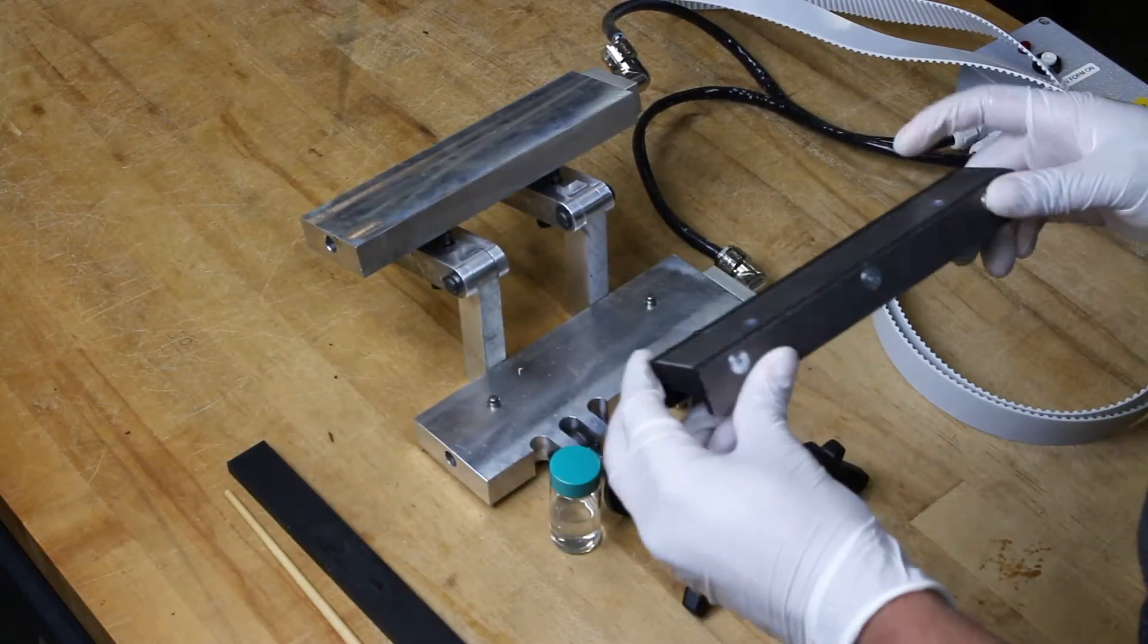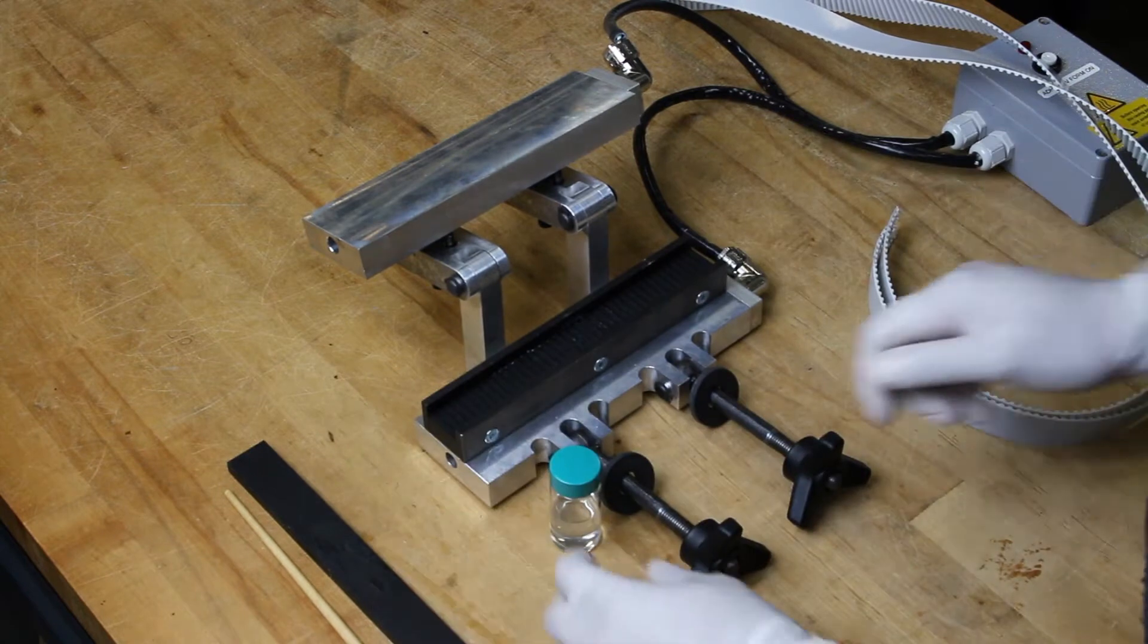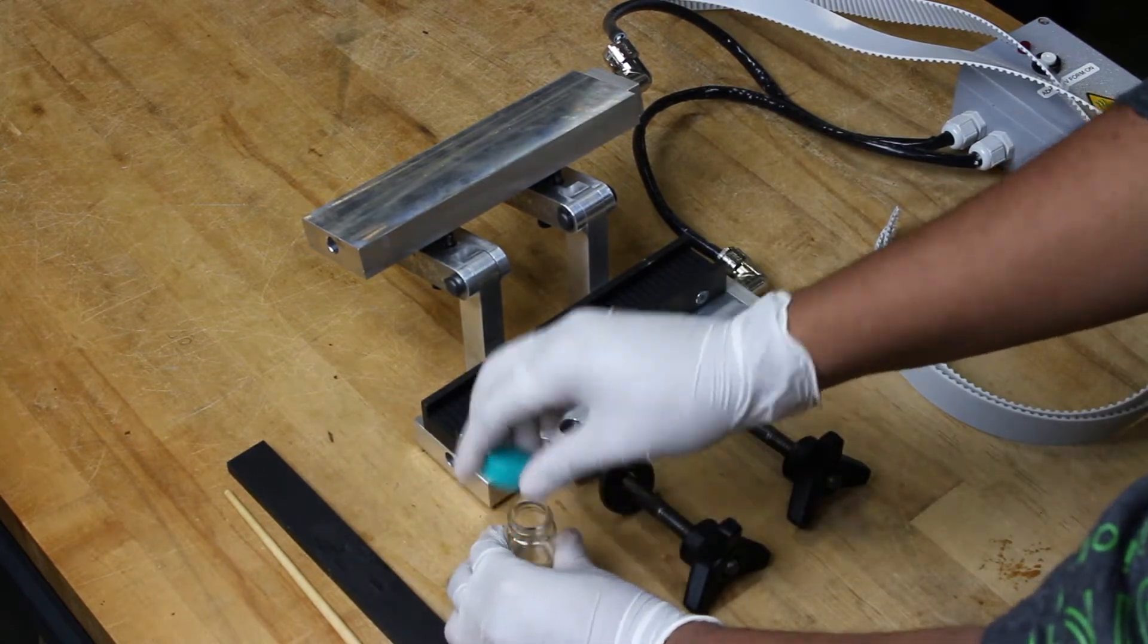First, prepare the welder for field welding by inserting the toothed bottom plate into the welder as shown.